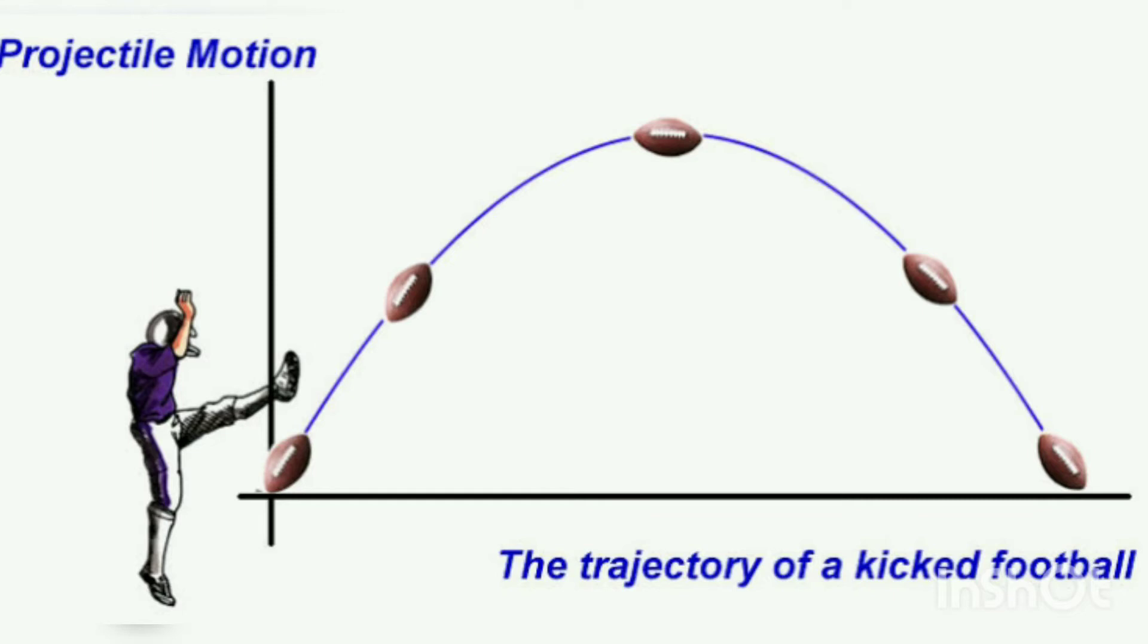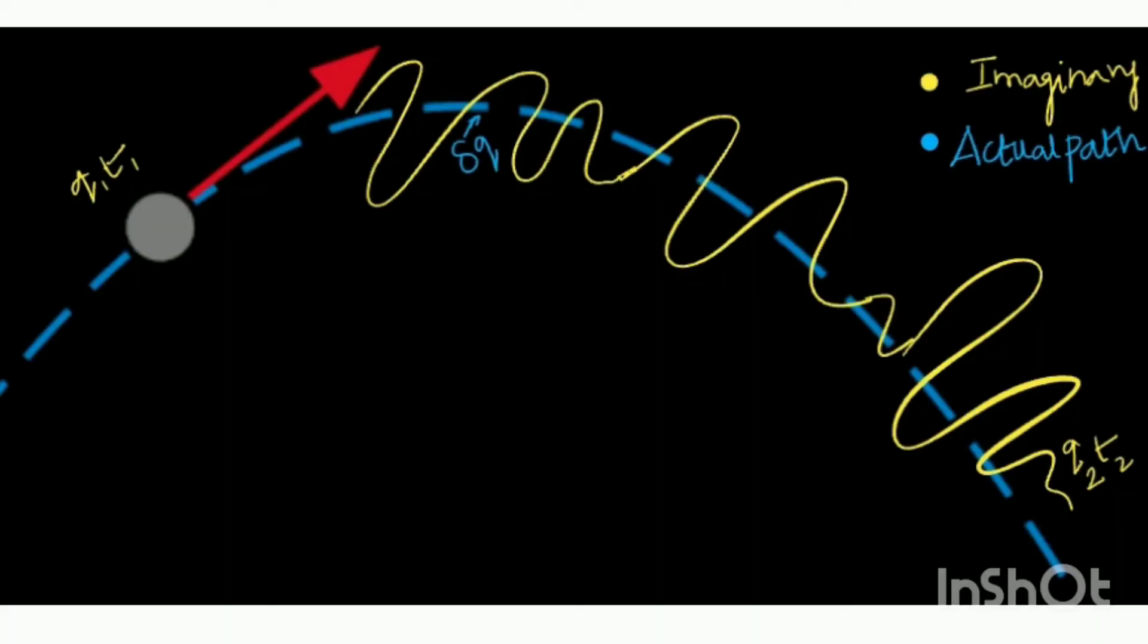Let us see a relevant example which addresses our two questions. Assume that we are kicking or throwing a ball. Q1 is a coordinate from where we throw the ball at instant t1. Then the ball reaches coordinate q2 at time instant t2. The actual trajectory of the ball is shown in blue.